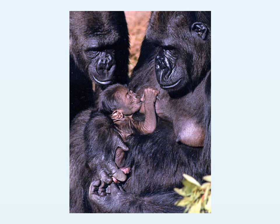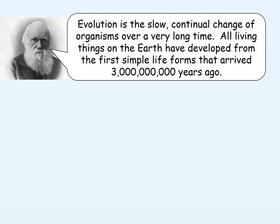You also see a lot of natural selective and evolutionary behaviors between primates and humans. For example, when animals are born, it is instinctual for them to want to feed. So let's take you through Darwin's theory — it's an overall summary. Evolution is the slow, continual change of organisms over a very long period of time. All living things on Earth have developed from the first simple life forms that arrived three billion years ago.